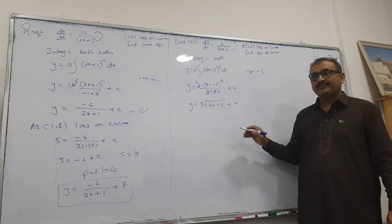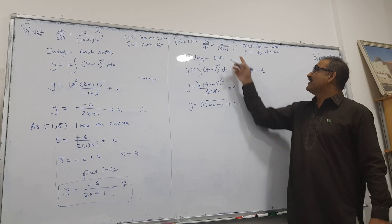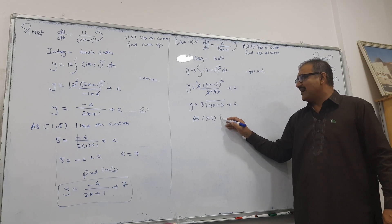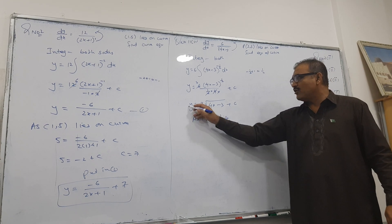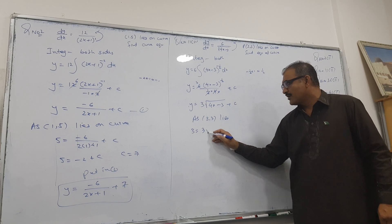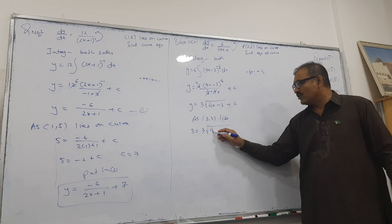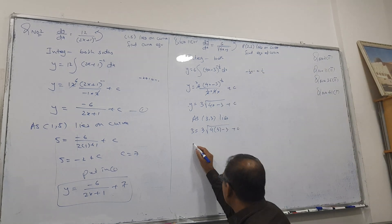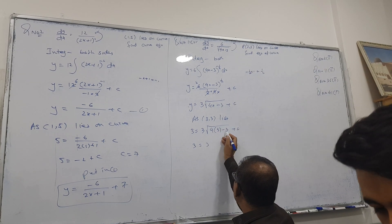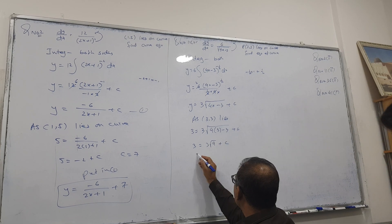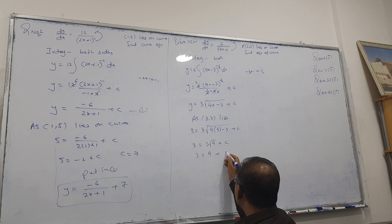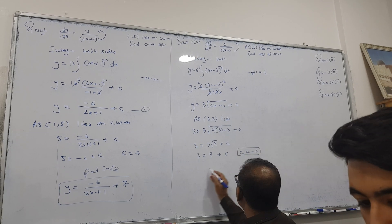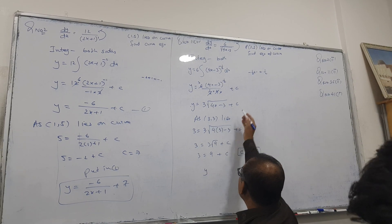And right now see, right here, as (3,3) lies on curve. So 3 will go in the place of y and this 3 go there. 4 times 3 minus 3 is 6. And let's see, Asim. So 12 minus 3 is 9, and 9 root, all of you know, is 3. So it becomes 9 here, so C becomes minus 6.